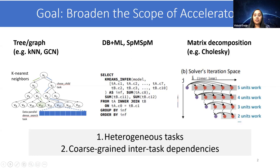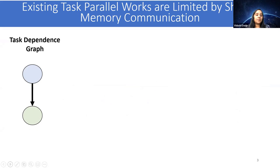Existing task parallel works do not take inter-task dependencies into account, and they miss several opportunities as we demonstrate later. To visualize the issue with current task parallel works, consider this task dependence graph, where the nodes are task types and edges represent inter-task dependencies.